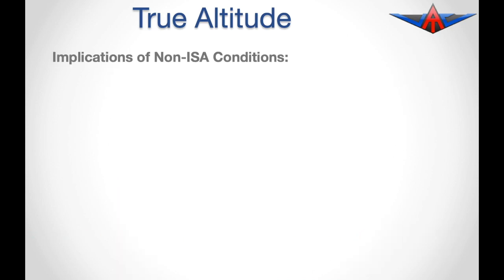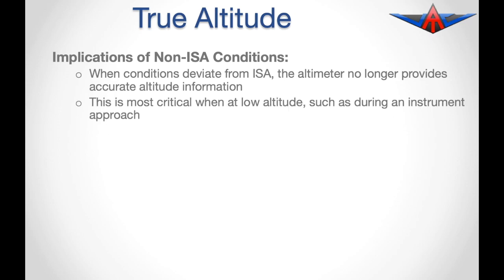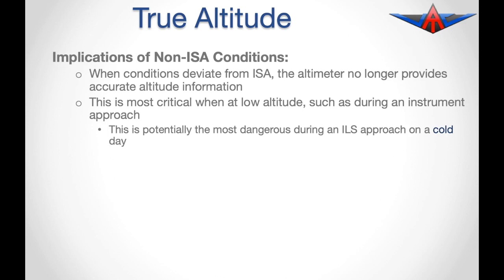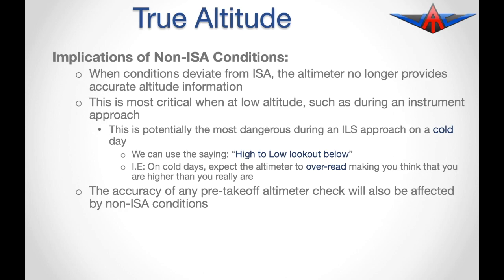What are the implications of this? If conditions deviate from ISA, the altimeter is no longer providing accurate altitude information. This is most critically significant at low altitude, such as during an instrument approach. One of the most dangerous situations is an instrument landing system approach on a cold day. To help us remember, we use the saying 'high to low, look out below' — meaning if we are flying into a low temperature situation, we are potentially lower than what the altimeter indicates. On a cold day the altimeter will over-read, making us think we are higher than we actually are. Additionally, the accuracy of any pre-take-off altimeter check is affected by non-ISA conditions.